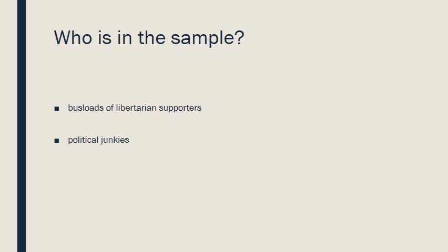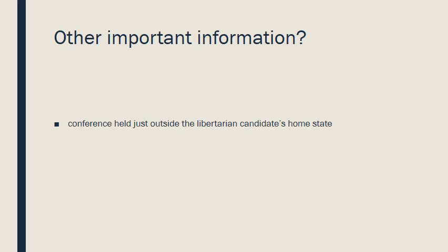Now we ask: who is in the sample? Who voted in this mock election? Two particular groups are mentioned: busloads of libertarian supporters and political junkies. Those are the two groups primarily making up the sample. We also have important information that the conference was held just outside the libertarian candidate's home state, which tells us something about how the sample was chosen.